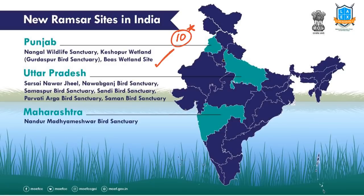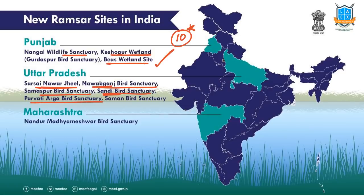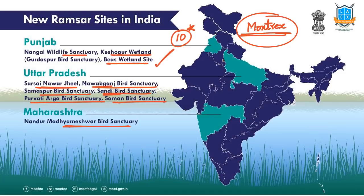Which of the following are the recently declared wetlands in India? Remember — in Punjab, UP and Maharashtra, new wetlands were declared. From Punjab: Nangal Wildlife Sanctuary, Keshapur Wetland, and Beas Wetland. From UP: Samaspur Bird Sanctuary, Nawabganj Bird Sanctuary, Sarsai Nawar Jheel, Sandhi Bird Sanctuary, Parvati Agra Bird Sanctuary, and Saman Bird Sanctuary. From Maharashtra: Nandur Madhmeshwar Bird Sanctuary. These are the 10 newly added Ramsar wetlands in India. There is also the Montreux Record, maintained under the Ramsar Convention, which lists highly threatened wetlands across the world.